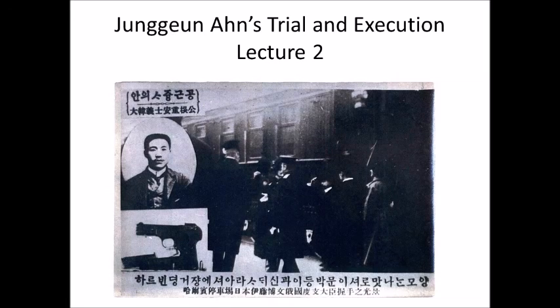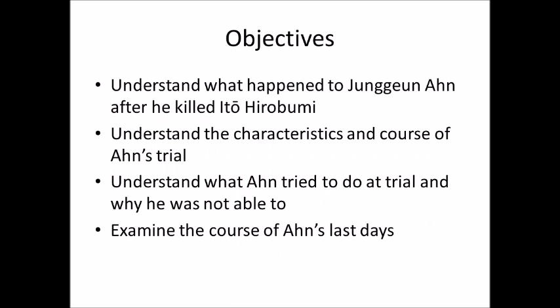In our second lecture, we'll be talking about Ahn's trial and execution. Our objectives are to understand what happened to Chungun Ahn after he killed Ito Hirobumi, to understand the characteristics and course of his trial, to understand what Ahn tried to do at his trial and why he was not able to do so, and finally to examine the course of Ahn's last days.